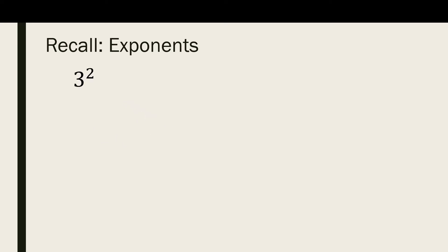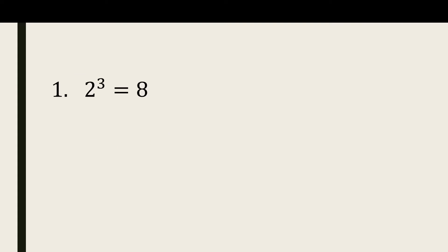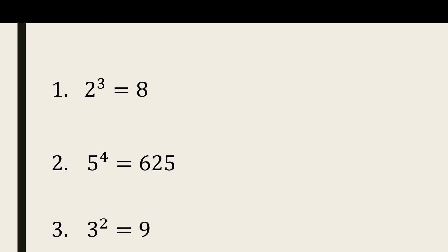For the last one, it's 3 squared. Since the base is 3 and the exponent is 2, we multiply 3 by itself twice: 3 times 3. The answer is 9. So, 2 to the third power is 8, 5 to the fourth power is 625, and 3 squared is equal to 9.